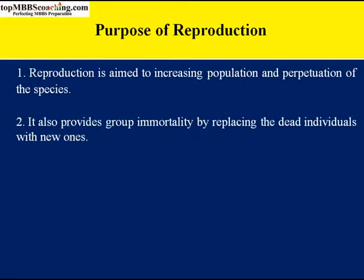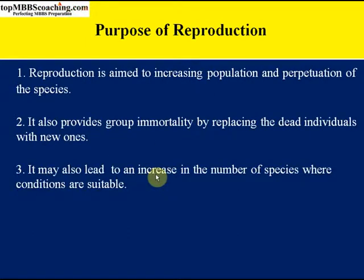Reproduction also provides group immortality by replacing dead individuals with new ones. Think: if reproduction doesn't happen and all individuals die one after another, there is a stage where no individual will exist on this earth — zero population. So reproduction provides immortality by replacing the dead with new ones. It may also lead to an increase in the number of species where conditions are suitable.